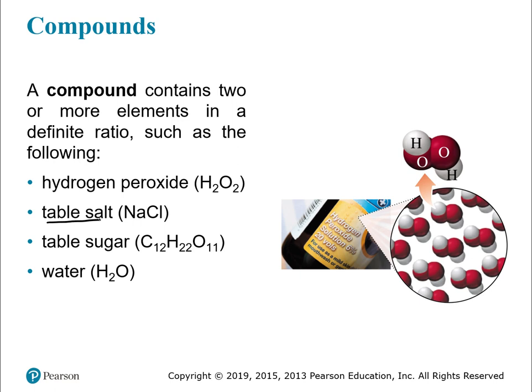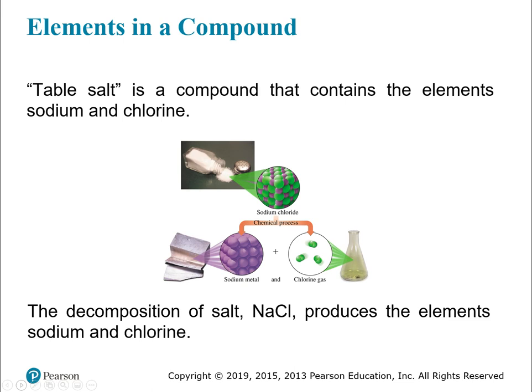Those two elements come together and form table salt — that's always what table salt is. It's always NaCl. Table salt contains sodium and chlorine, and the composition is always the same. If you decompose salt, you get two elements: sodium and chlorine. That's a key note — when you decompose a compound, it yields elements. Eventually, that's what you get to.